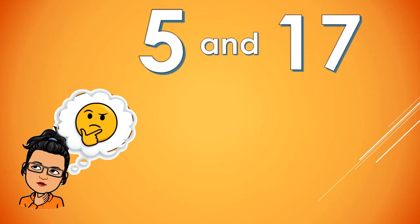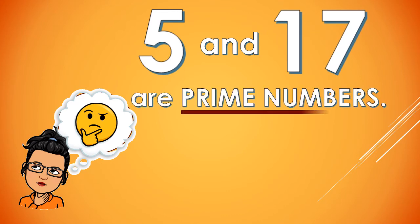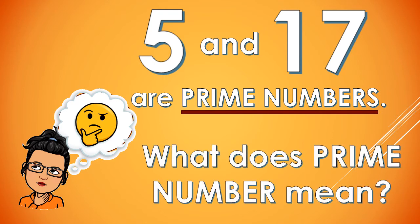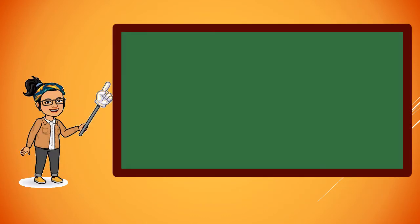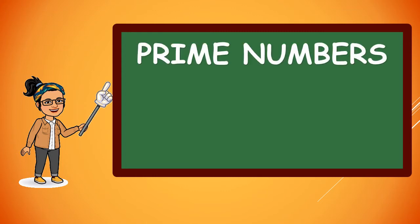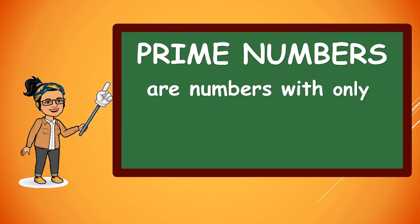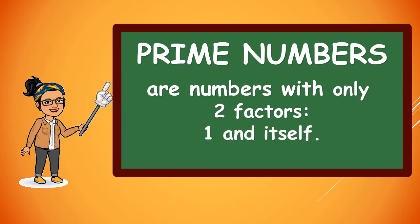So 5 and 17 are called prime numbers. What do you think prime numbers mean? When we say prime numbers, these are numbers with only 2 factors: 1 and itself.